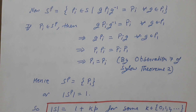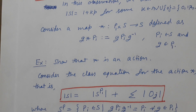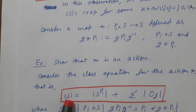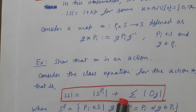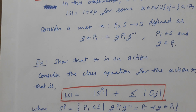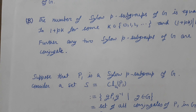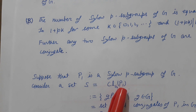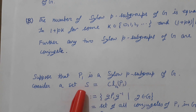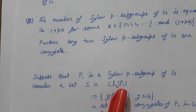By the class equation of the action, |S| = 1 + p·(something). This means the conjugacy class of P1 — the set of all conjugates of P1 — has order of the form 1 + pk.